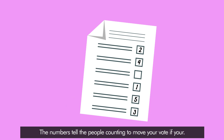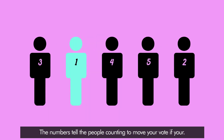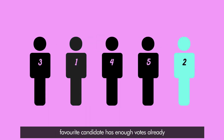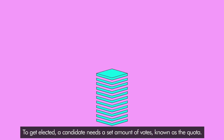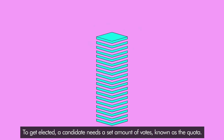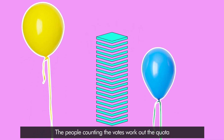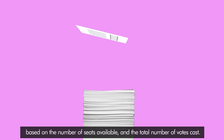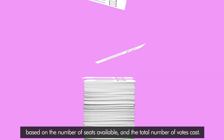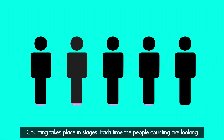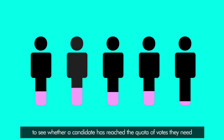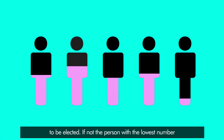The numbers tell the people counting to move your vote if your favourite candidate has enough votes already or stands no chance of winning. To get elected, a candidate needs a set amount of votes, known as the quota. The people counting the votes work out the quota based on the number of seats available and the total number of votes cast. Counting takes place in stages, with counters checking whether each candidate has reached the quota of votes needed to be elected.